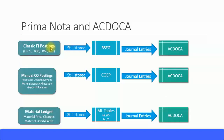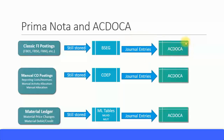Let's look at the different types of prima nota postings. First, classic FI postings: for example, if you have travel or expense reports, you post them using the FB50 or FB01 transactions — these are general journal ledger entries. For vendor or customer invoices, you can use FB70 or FB60 transactions. These are all classic FI postings and all prima nota. This prima nota is stored in the BSEG table, which is the old line item table. However, the journal entries are posted in the new ACDOCA table, the universal journal entry table.